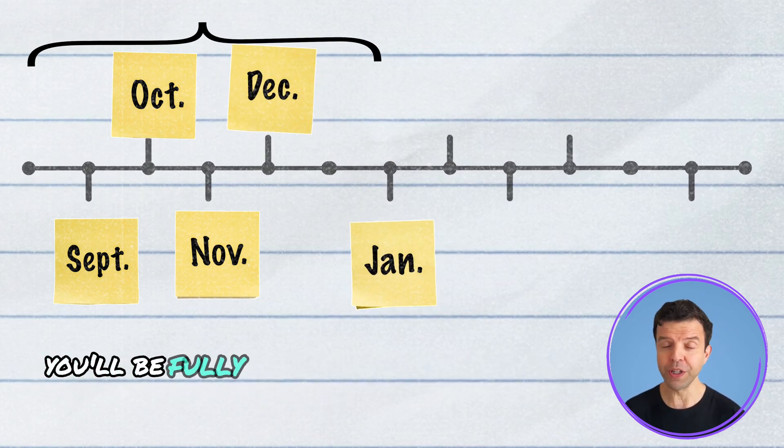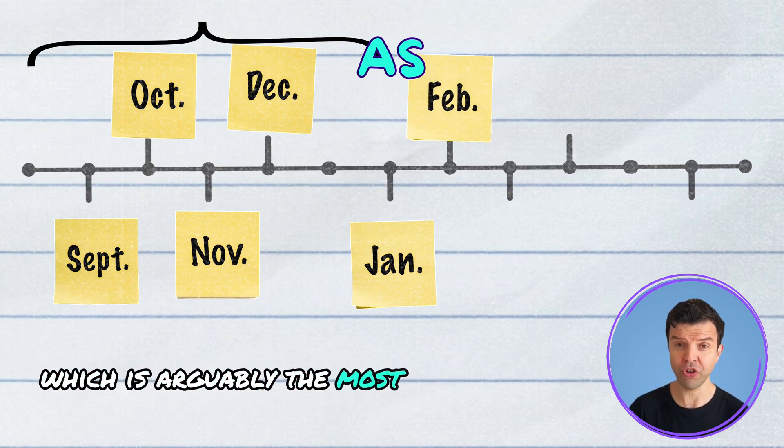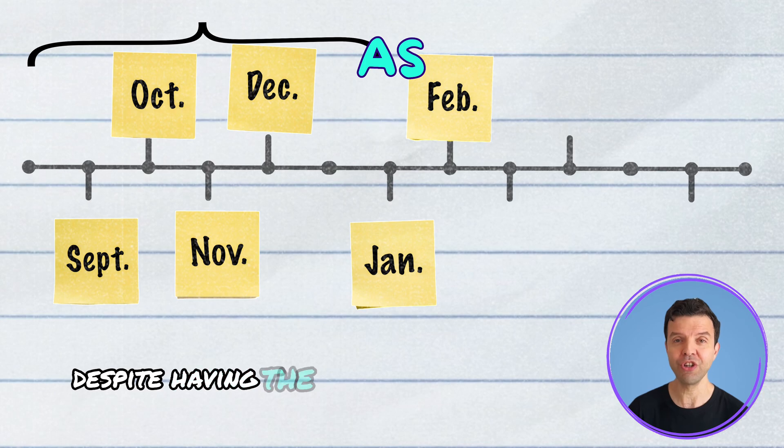By the end of January, you'll be fully done with AS and you'll shift to Unit 4, which is arguably the most challenging despite having the shortest content.